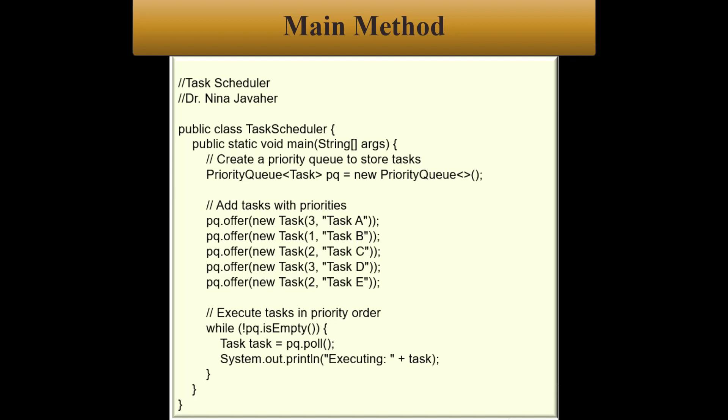So let's take a look at these lines of code. The PriorityQueue<Task> pq = new PriorityQueue<>(); line creates a priority queue named pq to store Task objects. The Task class was defined earlier. That's basically what we did earlier.